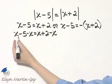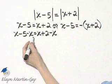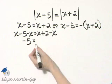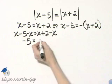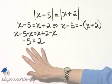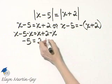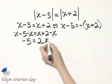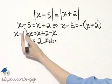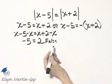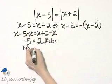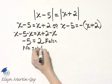And watch what happens. x minus x, that's 0x or 0, and I have negative 5 is equal to, notice the x is subtracted out again, is equal to 2. Now, what happens when all variables subtract out and you have a false statement? Negative 5 is equal to 2, that is a false statement. That means the original equation here has no solution. So this equation gives us no solution so far.